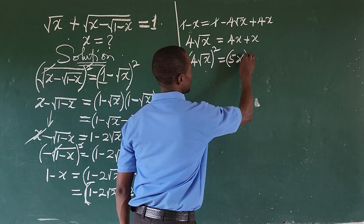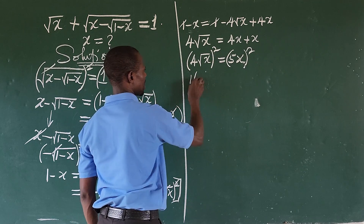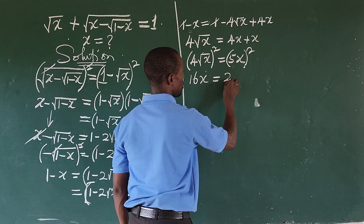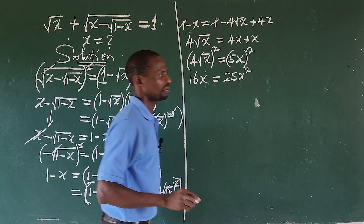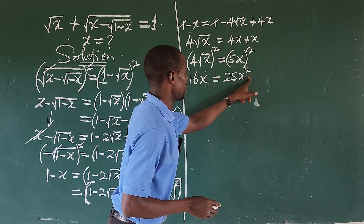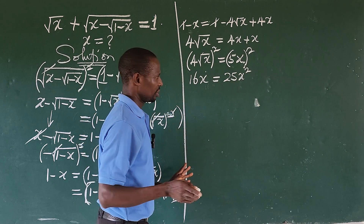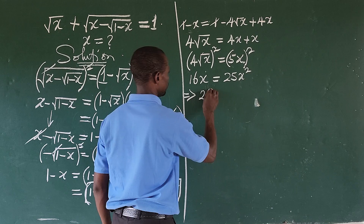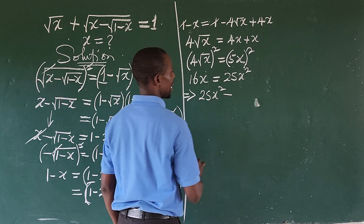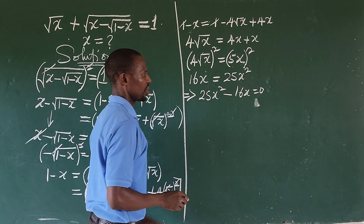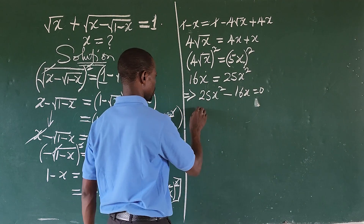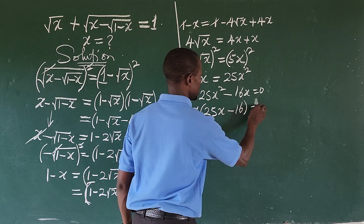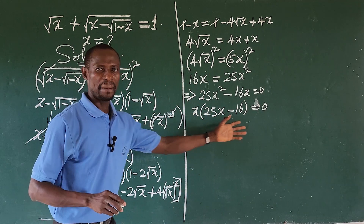To eliminate the remaining radical, we square both sides once more. Squaring 4√x gives 16x, and squaring 5x gives 25x². So we have 16x equals 25x². Rearranging: 25x² minus 16x equals 0. We factor out x to get x times (25x minus 16) equals 0.